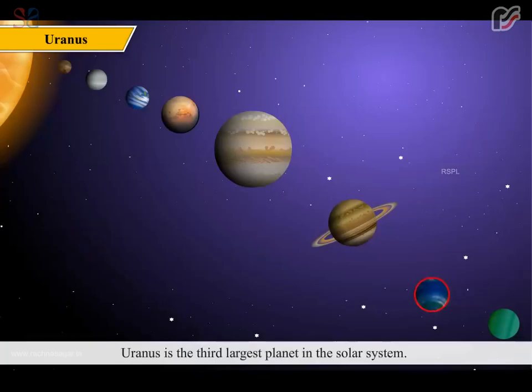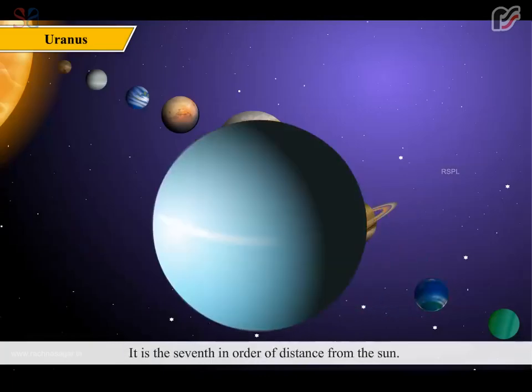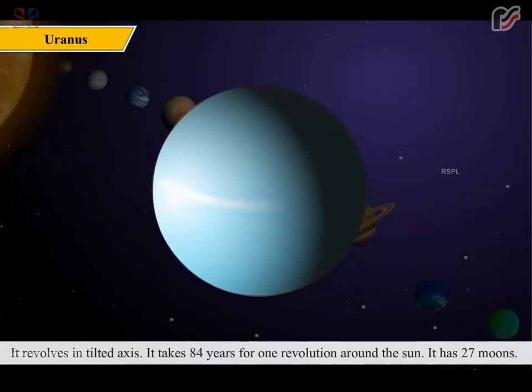Uranus is the third largest planet in the solar system. It is the seventh in order of distance from the Sun. It revolves on a tilted axis. It takes 84 years for one revolution around the Sun. It has 27 moons.